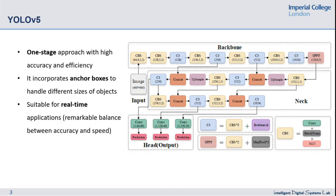YOLOv5 follows the one-stage approach with high accuracy and efficiency. It incorporates anchor boxes to handle different sizes of objects and is suitable for real-time applications with remarkable balance between accuracy and speed.